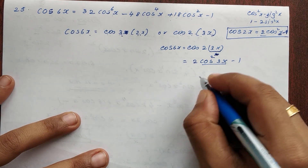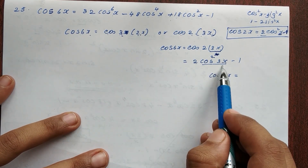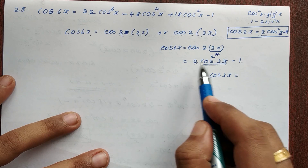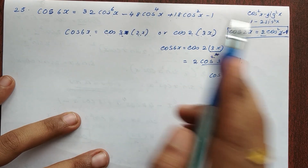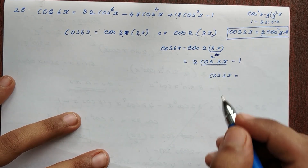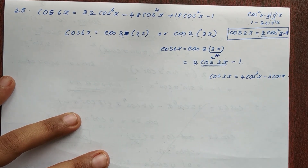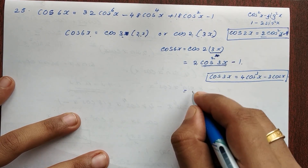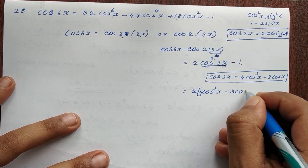Cos3x — using the triple angle formula, cos3x equals 4cos³x minus 3cosx. Now let's take this equation: 2cos²(3x) minus 1. Here we have cos3x. We will give this result: 2 into (4cos³x minus 3cosx).